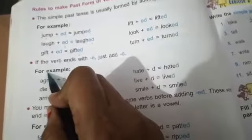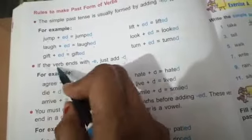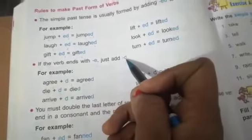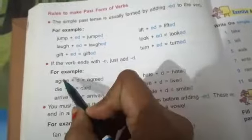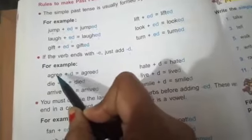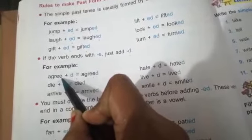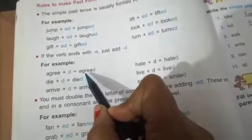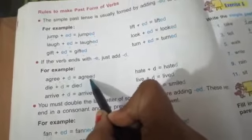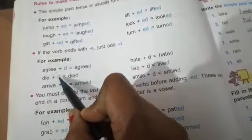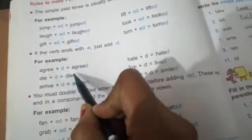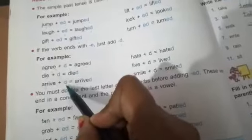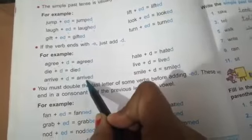Now, another rule is if the verb ends with e, just add d, only d. Example: agree. So agree is ending with e, so what we have to do? We simply add d and it will be past form agreed. Die, after adding d, past form died. Arrive, after adding d, arrived. So like this also we can make past form.